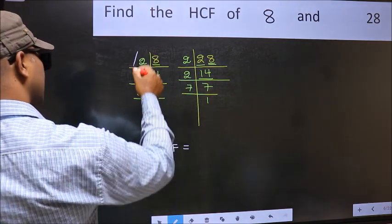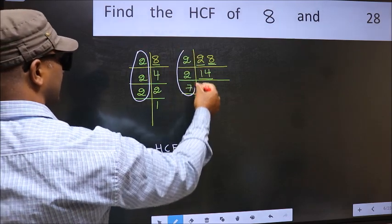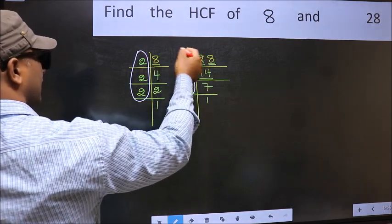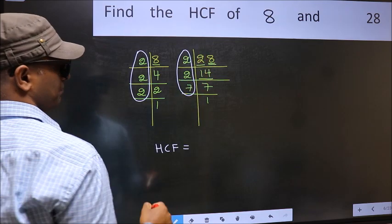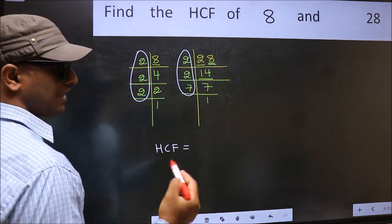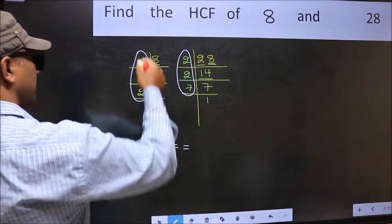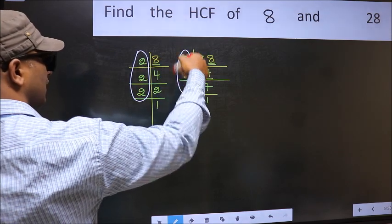That is here, here, and here. Here and also here. So now let us find the numbers which should be present here and also here.